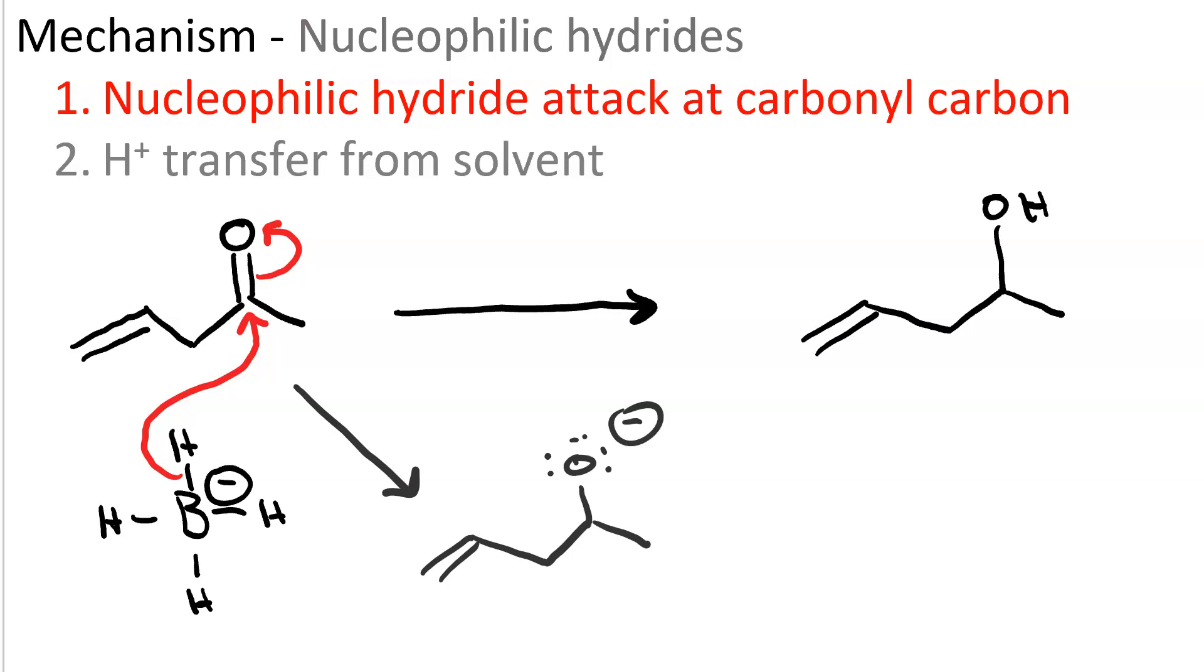Sodium borohydride is usually used in methanol. Water will work too. But the methanol acts as a weak acid that supplies the proton. So the solvent is the source of protons. The alkoxide acts as the base. And this is just run-of-the-mill proton transfer to give us our final product, the alcohol.